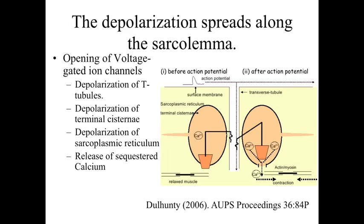That depolarization on the sarcolemma essentially triggers voltage-gated ion channels. The voltage difference triggers neighboring ion channels to open, and the depolarization spreads across the sarcolemma — the plasma membrane of the muscle cell. Anatomically, we have T-tubules, which are extensions of that plasma membrane that, instead of running along the membrane's length, dive down into the muscle at the A-I junction. When the membrane depolarizes, we also depolarize the T-tubules, carrying that charge and ion flow into the sarcoplasm of the skeletal muscle cell.